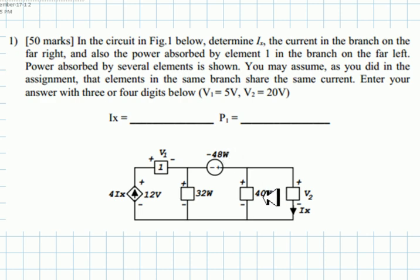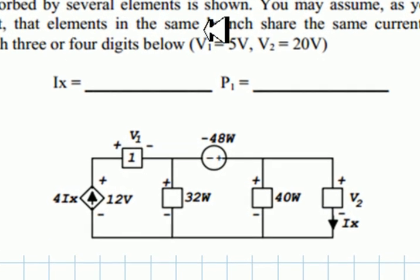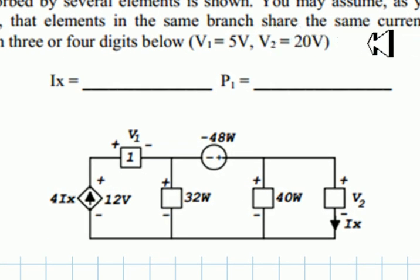You may assume, as you did in the assignment, that elements in the same branch share the same current. So there is a branch between this node and that node. Those two elements have the same current. The current in this element is 4IX.